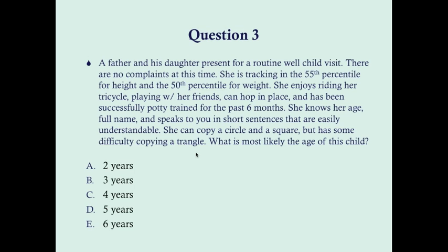Question three: a father and his daughter present for a routine well-child visit. There are no complaints. She's tracking in the 55th percentile for height and 50th percentile for weight. She enjoys riding her tricycle and playing with her friends. She can hop in place and has been successfully potty trained for the past six months. She knows her age and full name, speaks in short sentences that are easily understandable, can copy a circle and a square but has some difficulty copying a triangle. What is the most likely age? A) 2, B) 3, C) 4, D) 5, or E) 6 years.